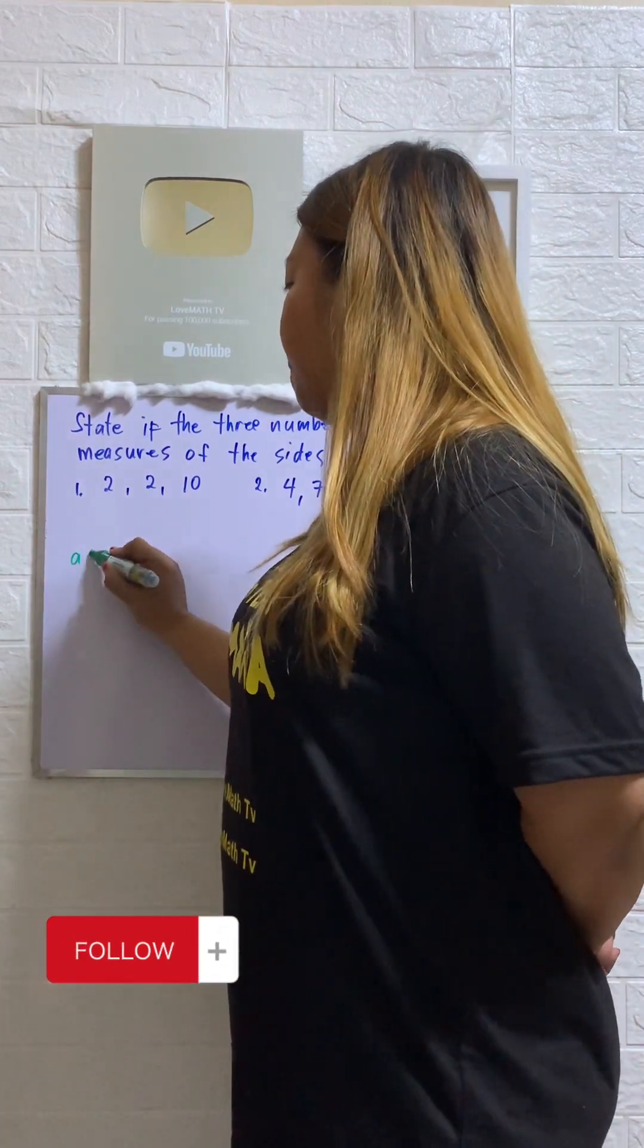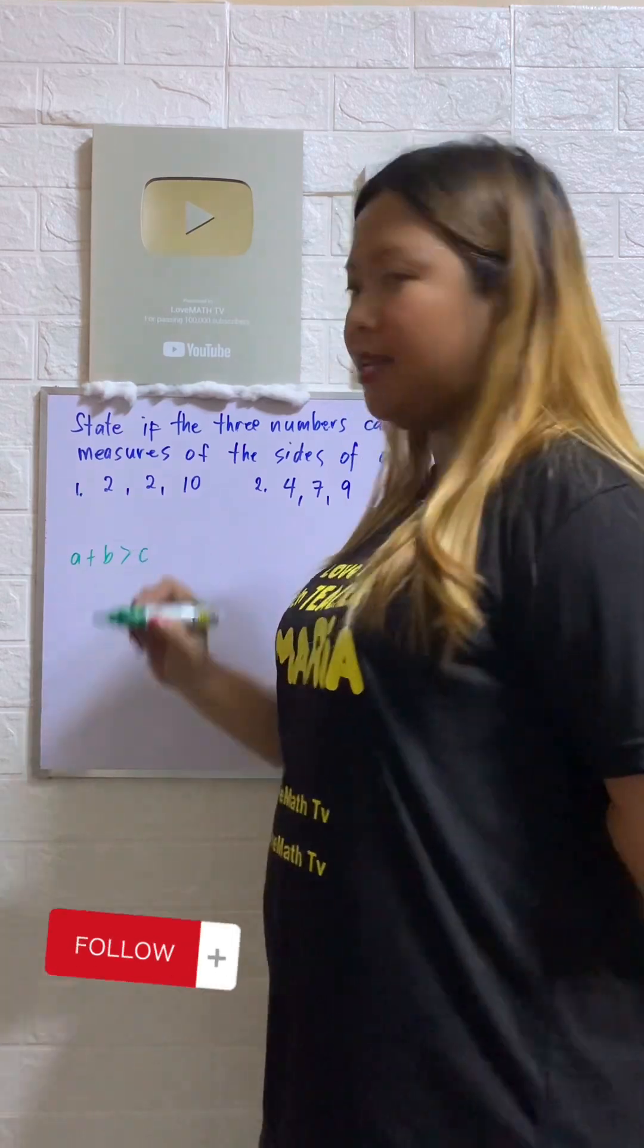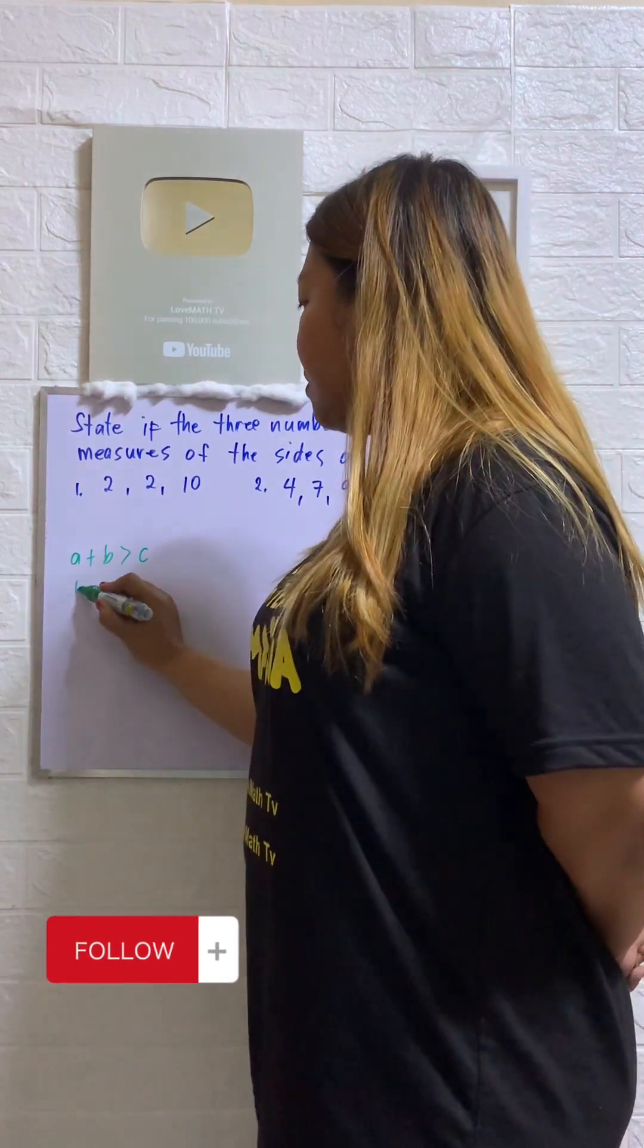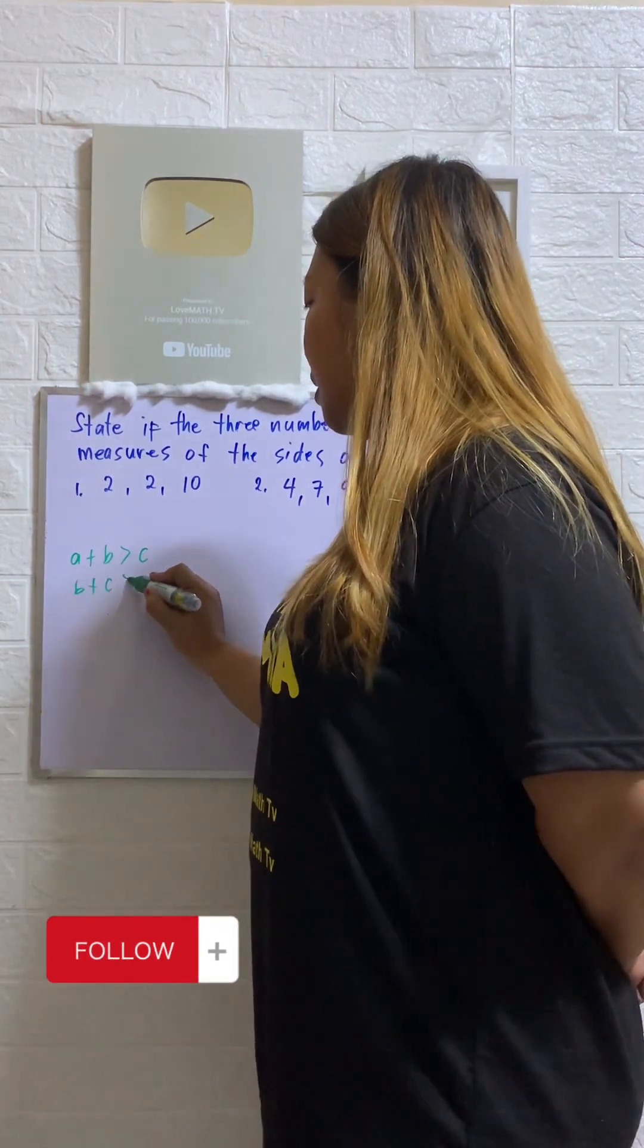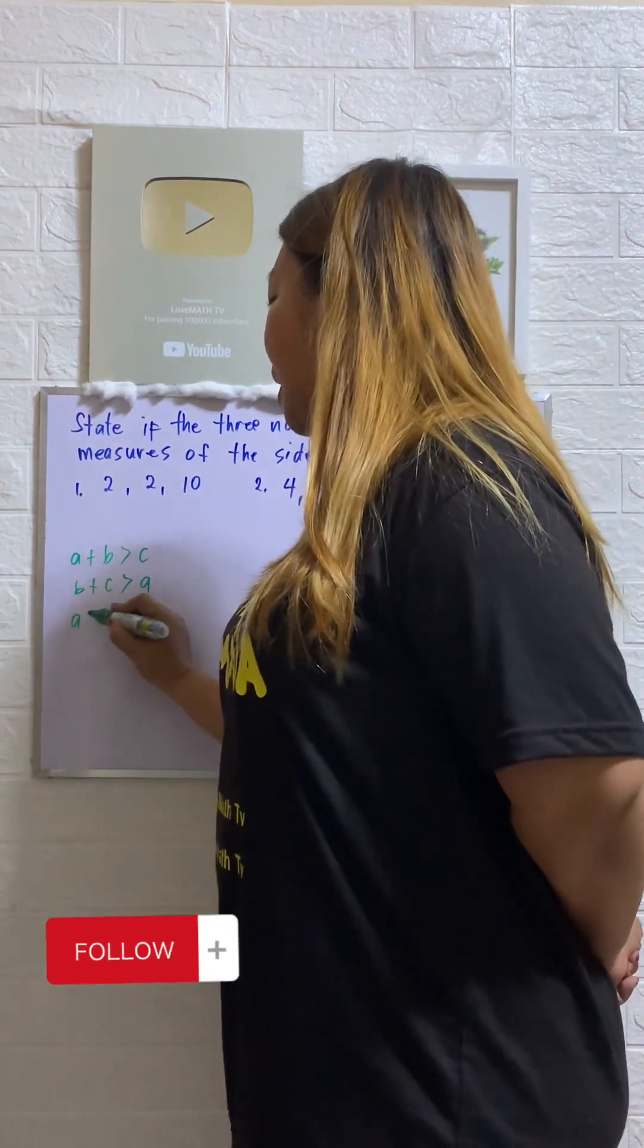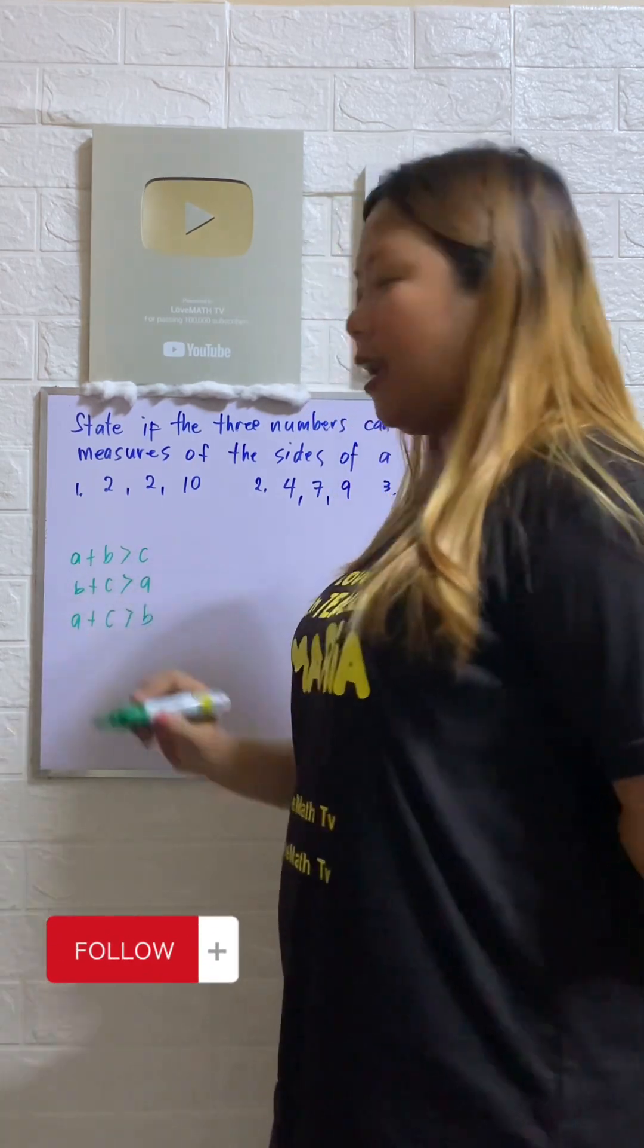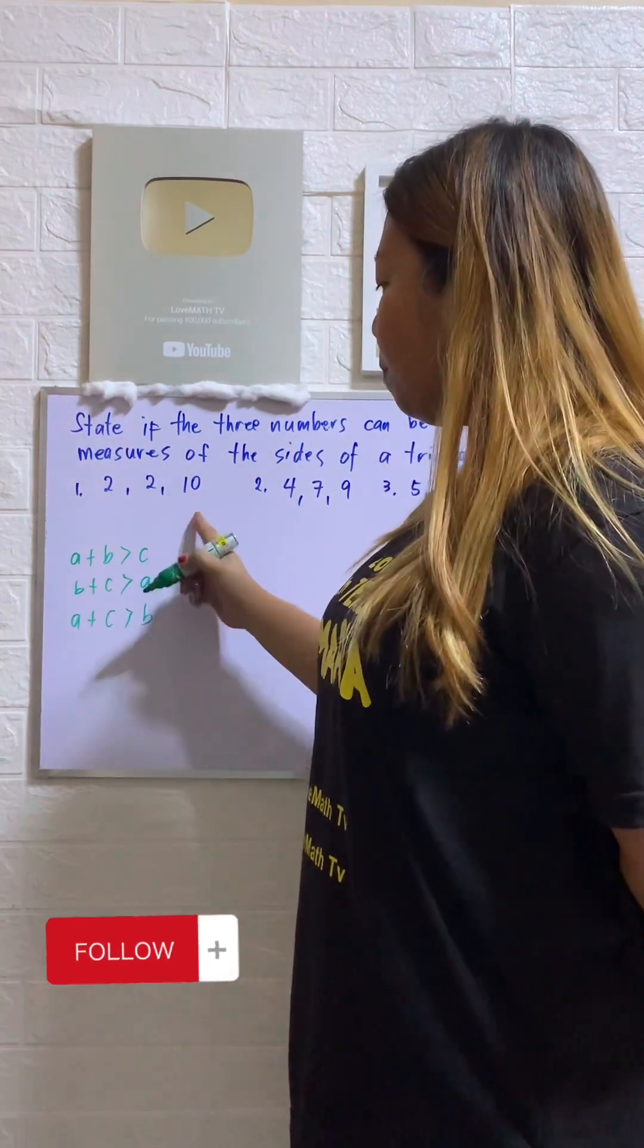If we have side A plus side B, that should be greater than side C. Also, if we have side B plus side C, that should be greater than side A. And if we have side A plus side C, that should be greater than side B. So how are we going to perform that?